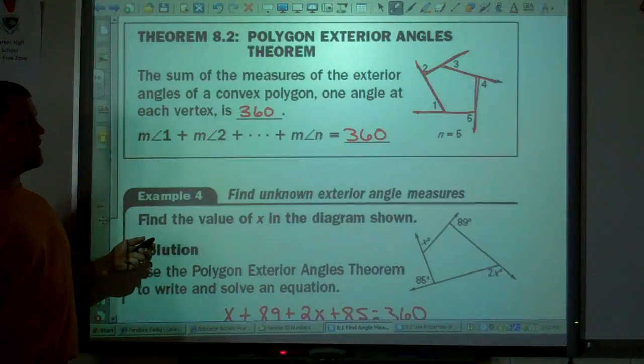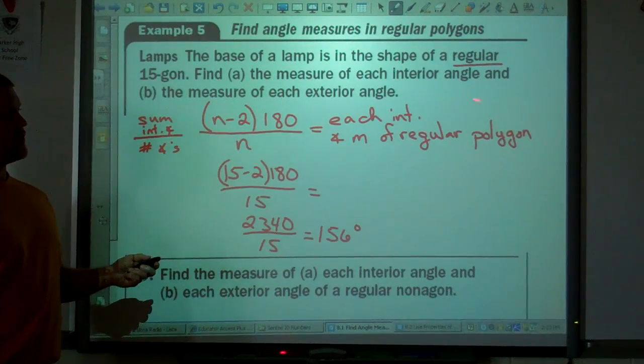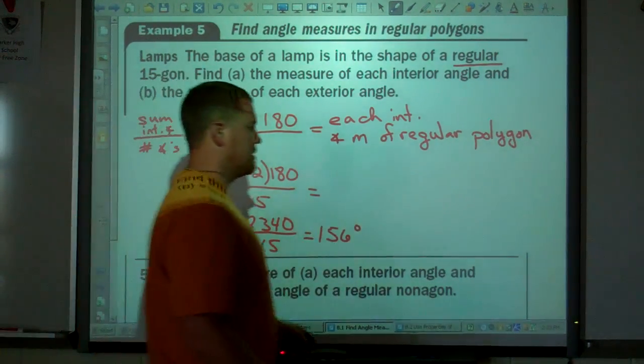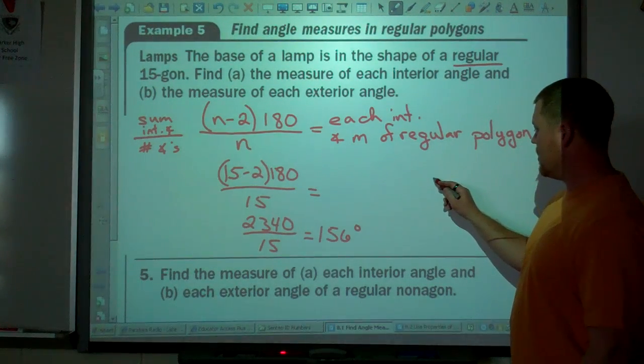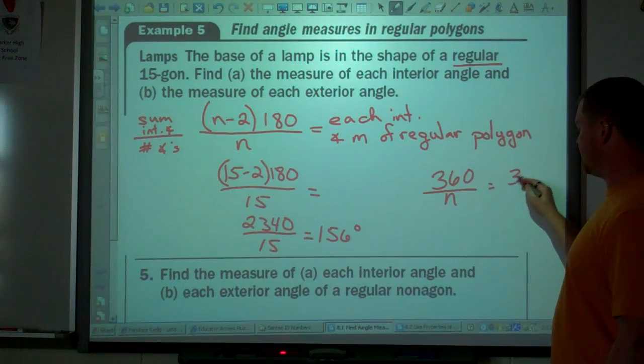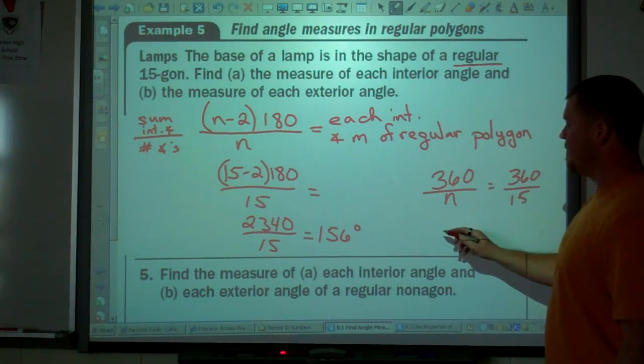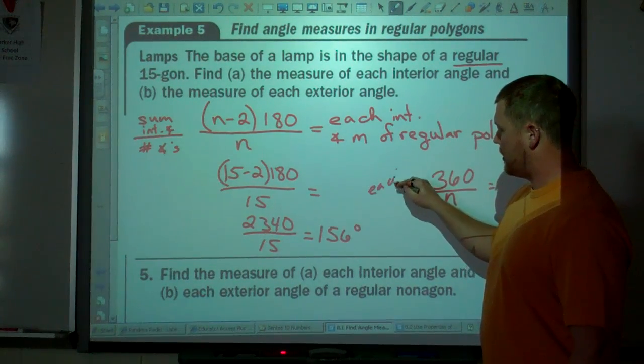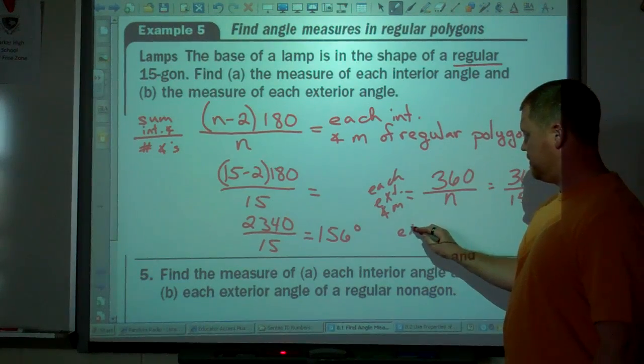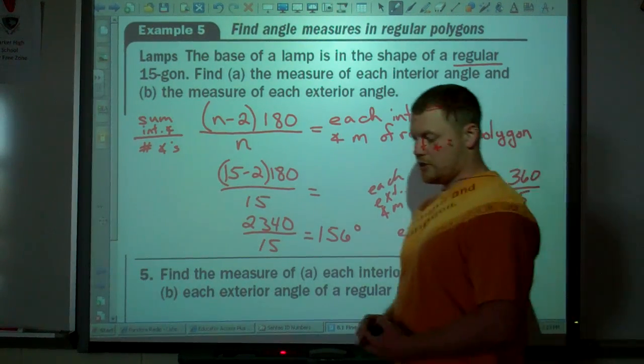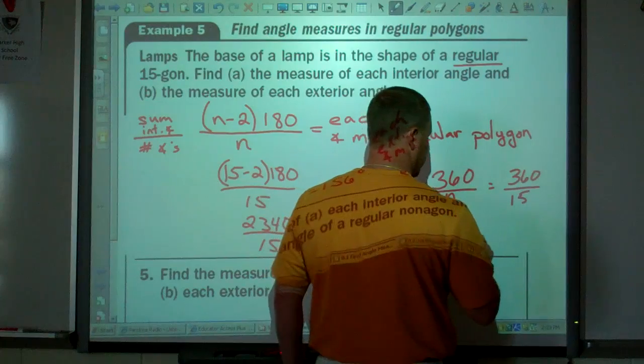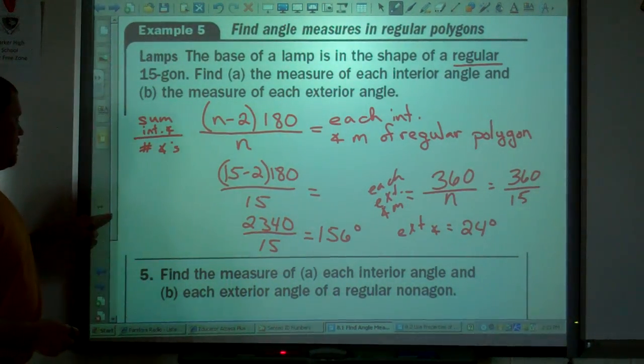And now, like we just got done saying, the exterior angles add up to 360 degrees. Now, if it's regular, what do you think is going to be true about the exterior angles? They're all going to be the same too, right? So then we take, and if they all add up to 360 and we know how many there are, we take 360 divided by n, which in this case is 15. So 360 divided by 15, that equals each exterior angle of a regular polygon. That's going to equal 360 divided by 15 is 24 degrees.